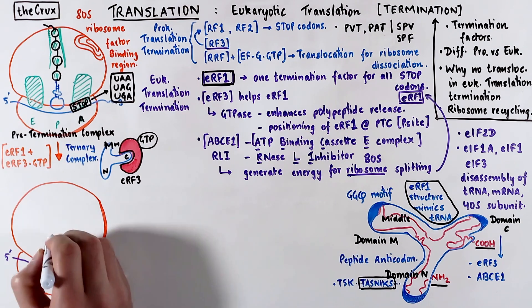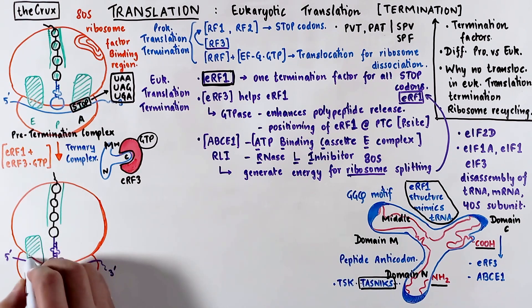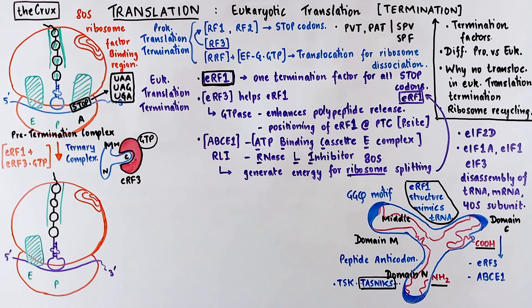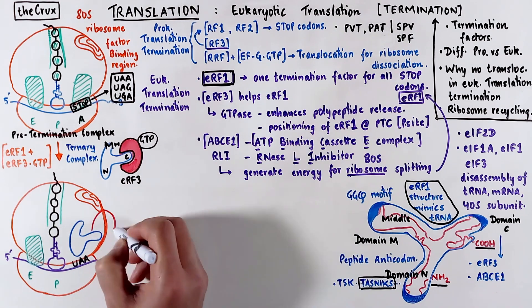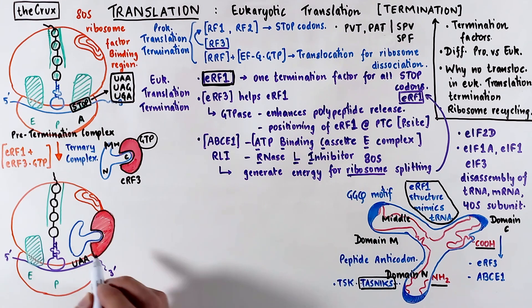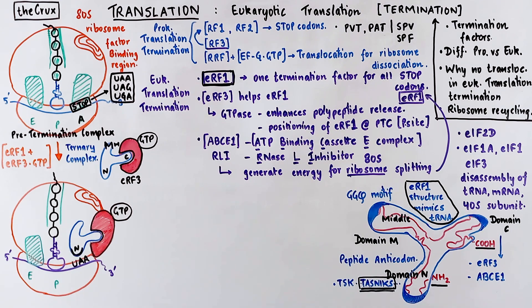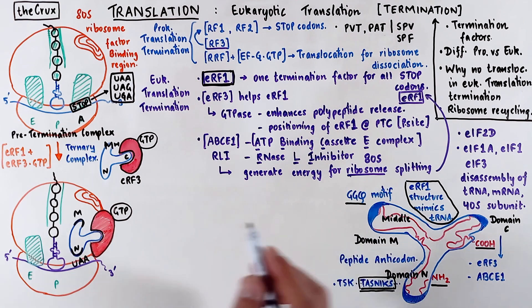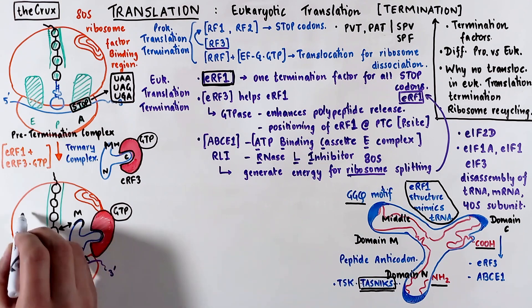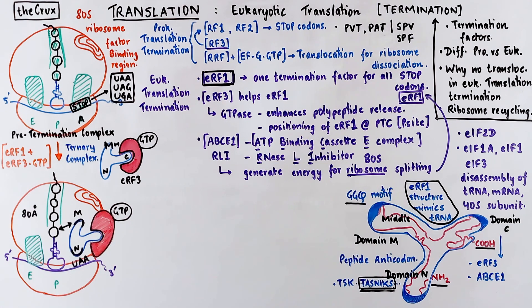Let's sketch out the structure. For simplicity, the stop codon here is UAA, present at the A site. The ternary complex is positioned so that domain N of ERF1 contacts and recognizes the stop codon. Release factor 3 then positions itself near the junction of the 40S and 60S subunits, and part of it also touches the factor binding region. In this complex, domain N is positioned where it should be, but domain M, which has the GGQ motif, is about 80 angstroms away from the tRNA on the P site, so the GGQ motif cannot cleave the polypeptide just yet.